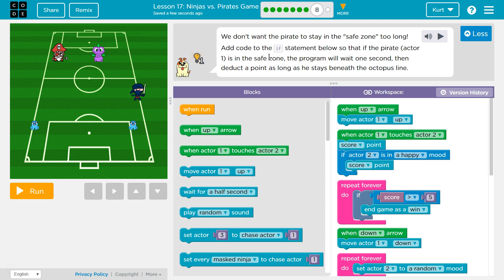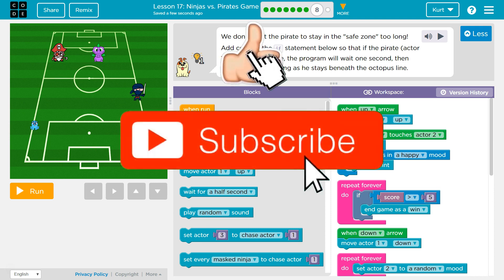We don't want the pirate to stay in the safe zone for too long. Add code to the if statement below so that if the pirate actor 1 is in the safe zone, the program will wait one second. Then deduct a point as long as he stays beneath the octopus.